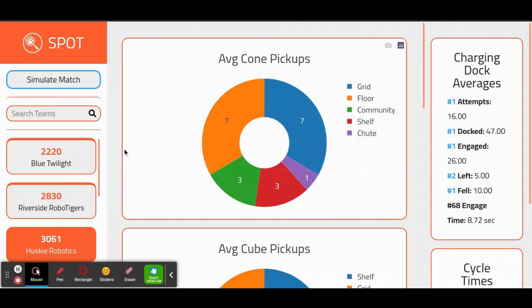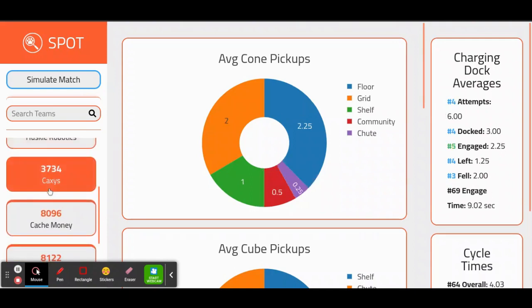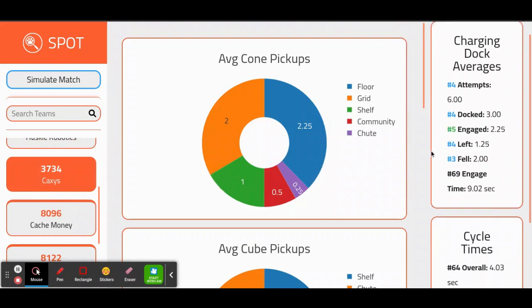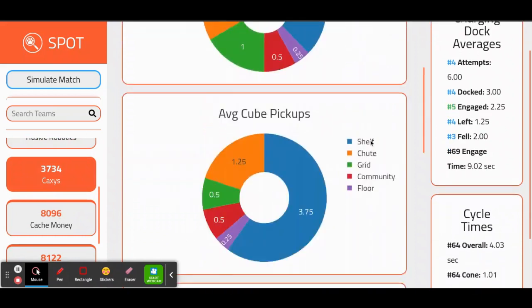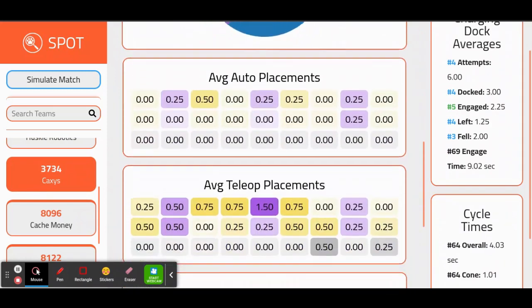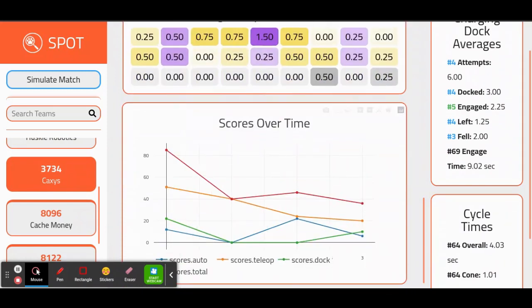When you visit the Analysis page, you should have a column to the left of your screen containing a Simulate Match button and all the teams attending your event. By clicking on the various team buttons, you'll be able to see the data you collect from scouting. The data includes average cone pickups, average cube pickups, average auto placements, average teleop placements, and scores over time.